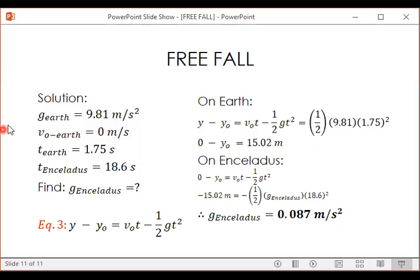So what will we get? The acceleration due to gravity on that satellite. So for the solution, let's jot down all the given. We have Earth's gravitational acceleration, we have the initial velocity which is zero since it's freefall, then we have the time elapsed on Earth and then time elapsed on Enceladus. And what we need to find is the gravity, acceleration due to gravity on Enceladus.